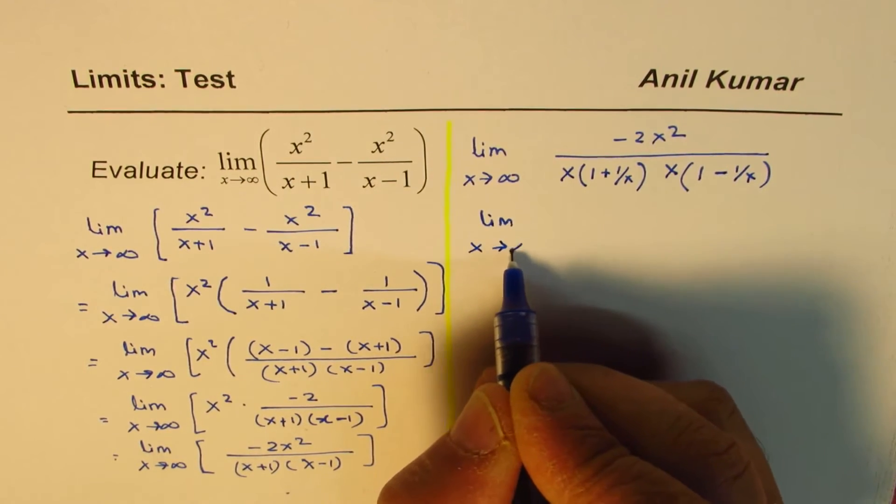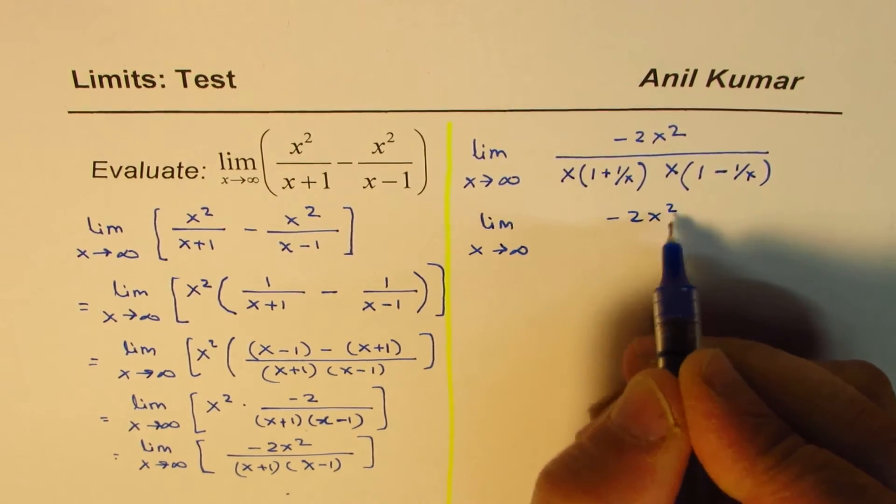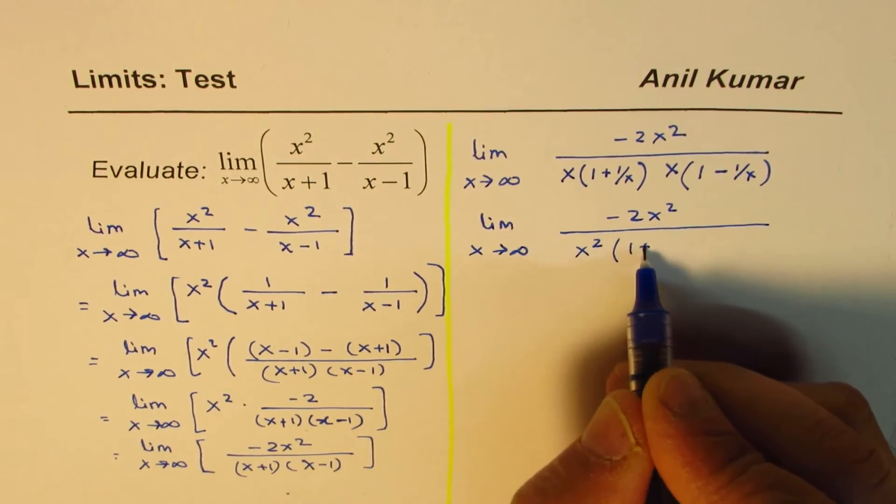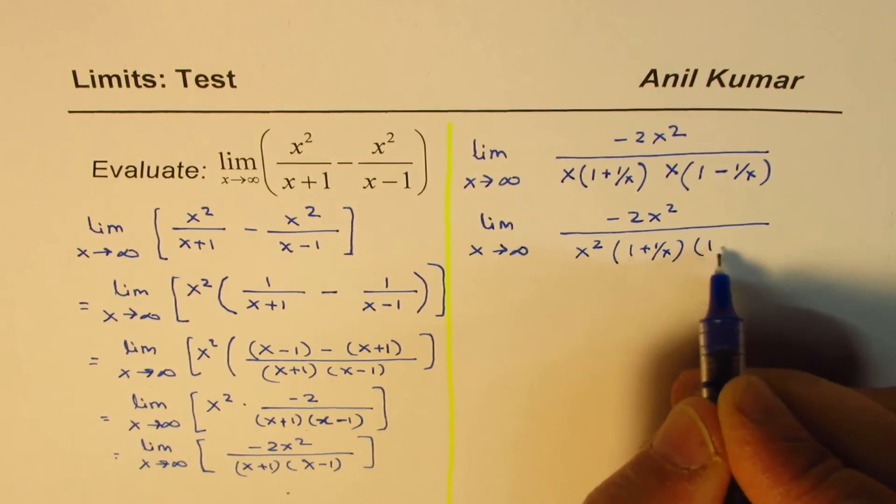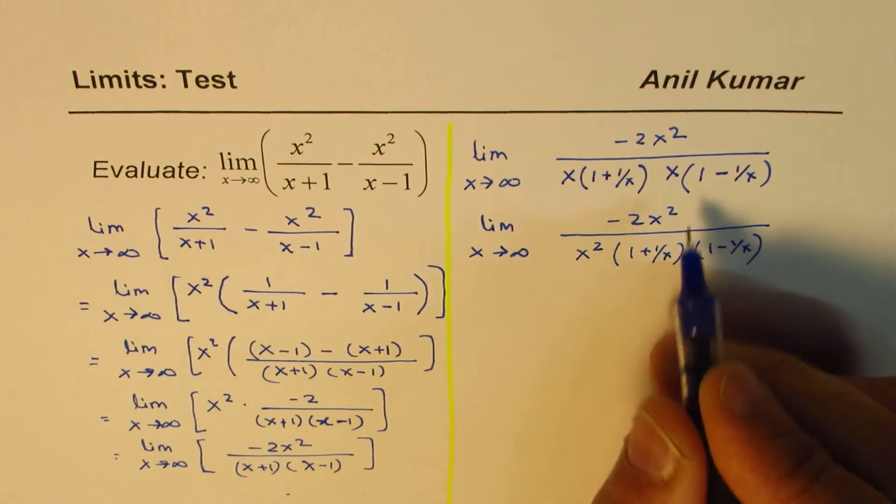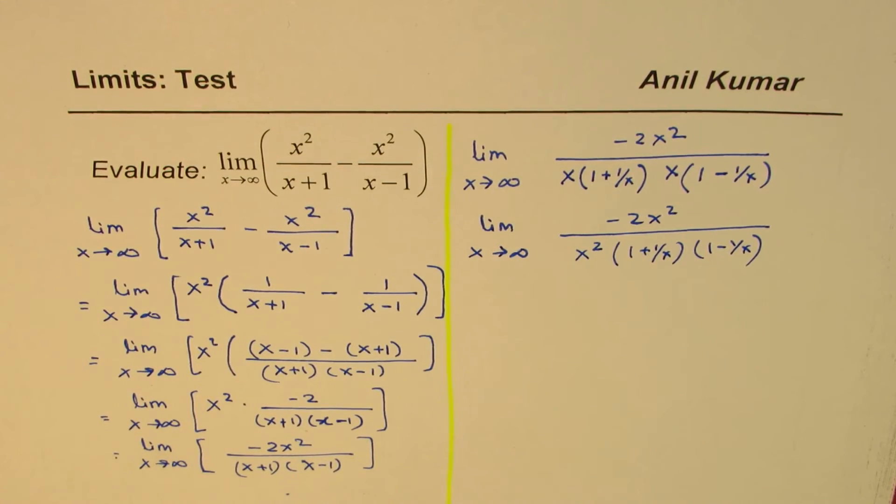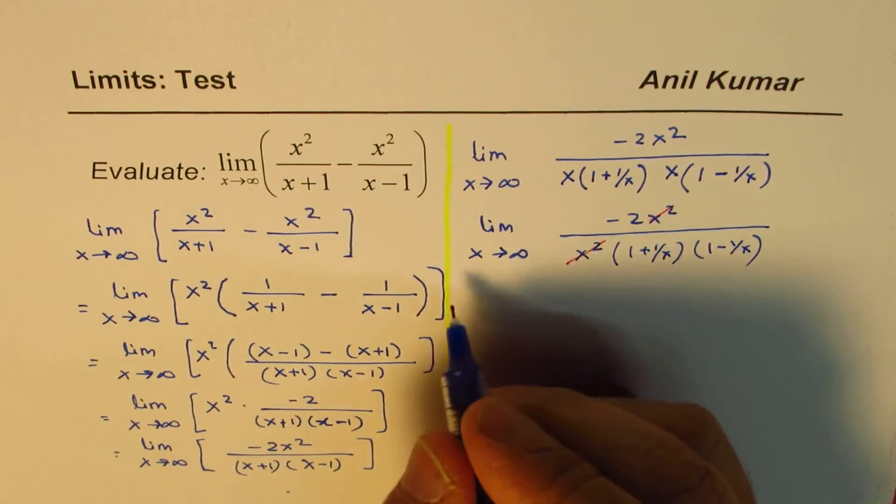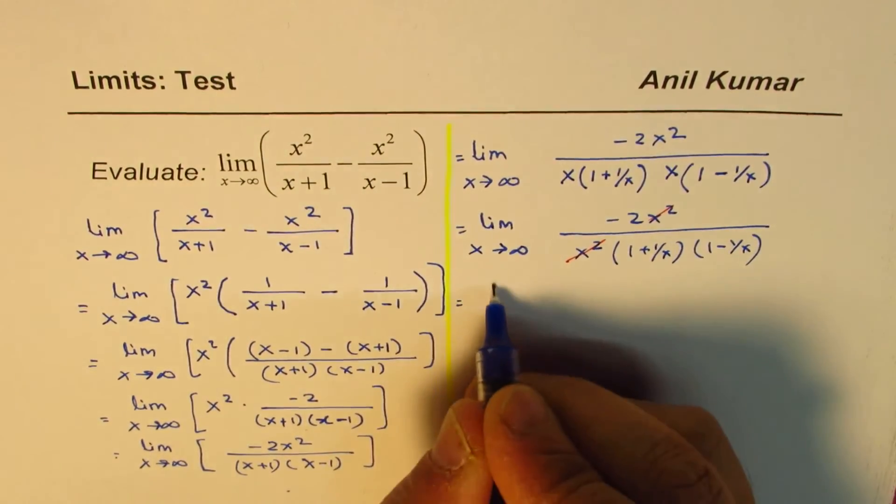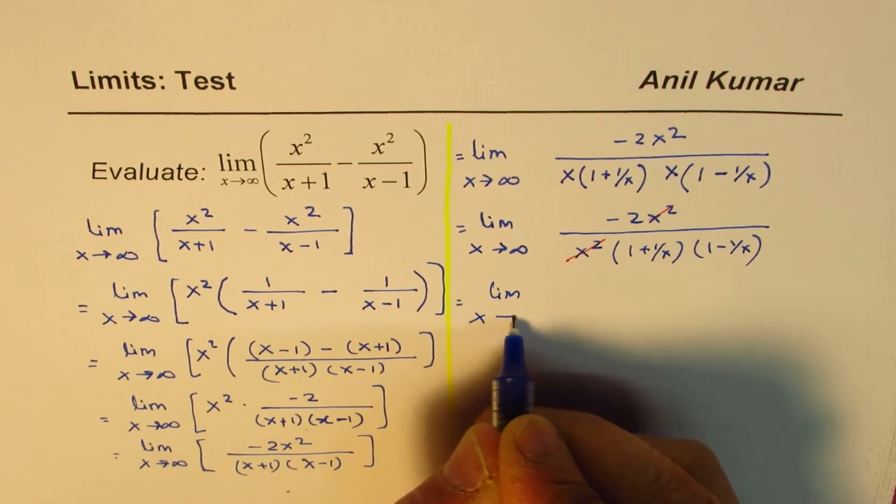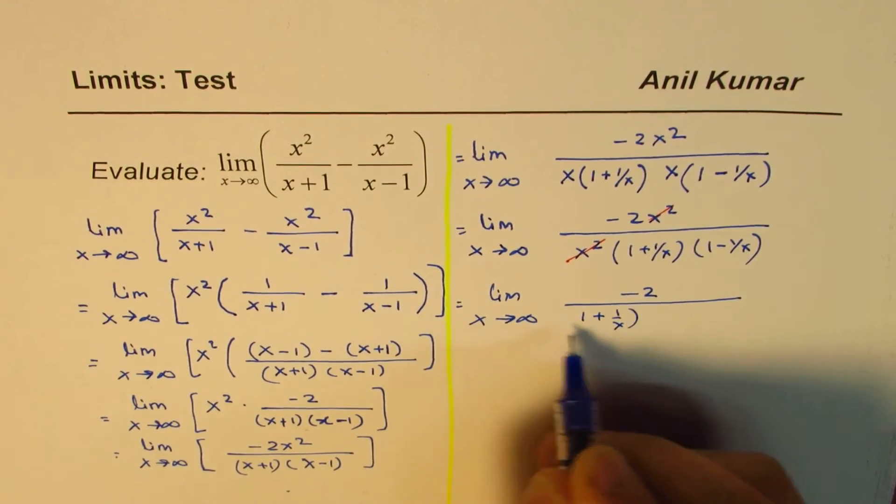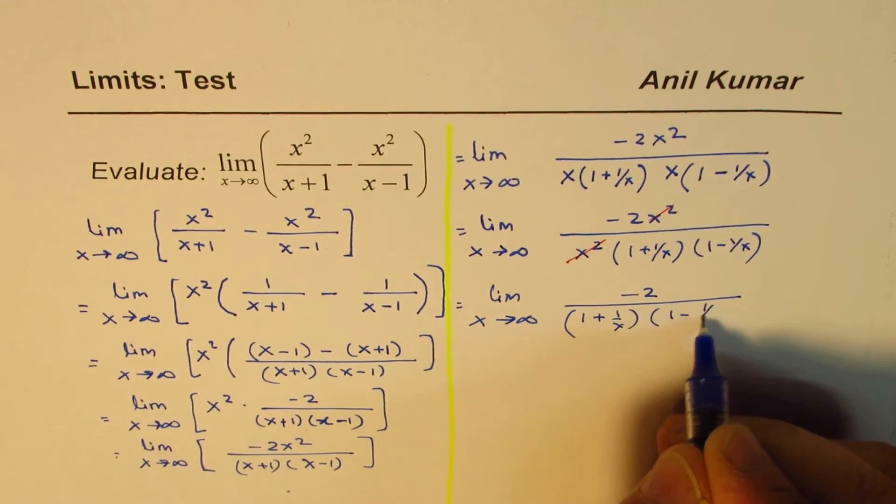So we're kind of moving slow to understand the concept here. Any rational functions like this could be actually solved in this process. So I'm not missing any steps here. In some of my videos, I've cut short. Now, look, we have x squared and x squared in numerator and denominator. It could be canceled. So we could write this also as equal to limit x approaches infinity of minus 2 over 1 plus 1 over x times 1 minus 1 over x.